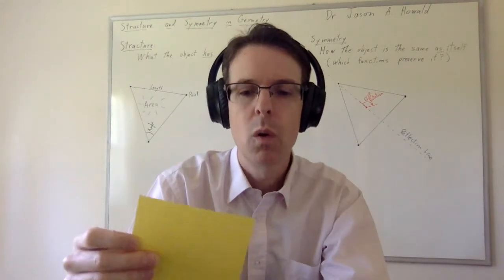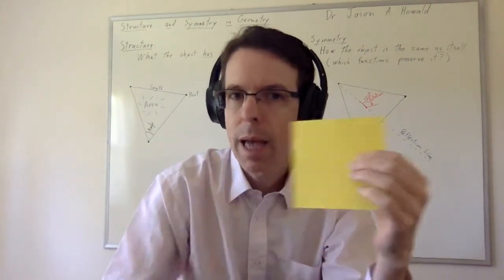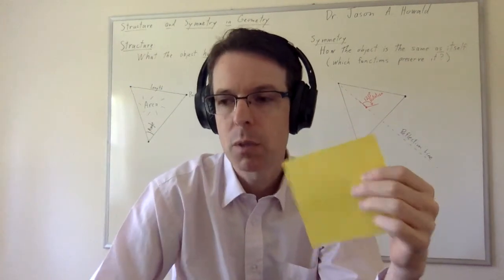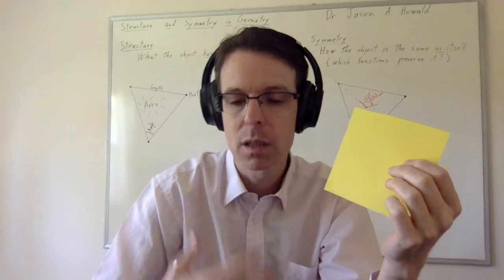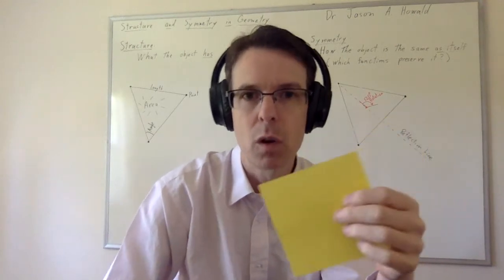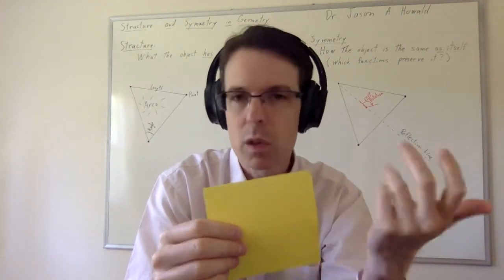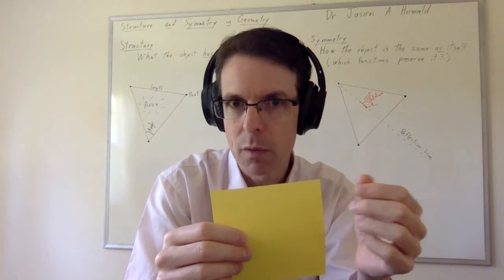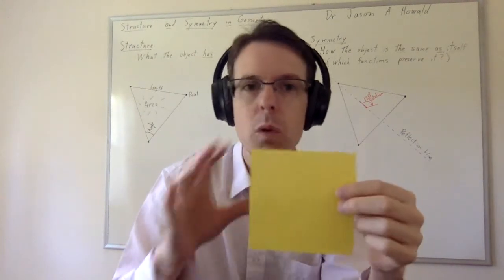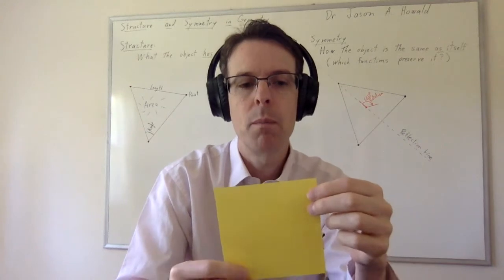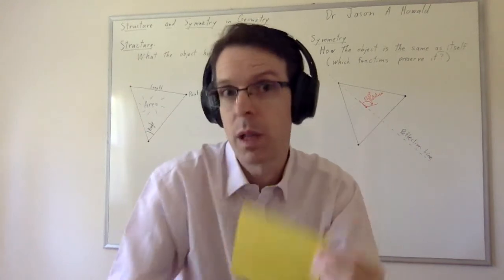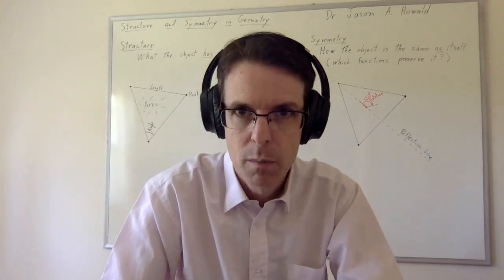As a general rule, when structure is added to a shape, symmetries are taken away because the symmetries can't preserve that extra structure. So if I decorate one of the corners of my square with a smiley face, then it will lose some or all of its symmetries because I don't have smiley faces on all the other corners.